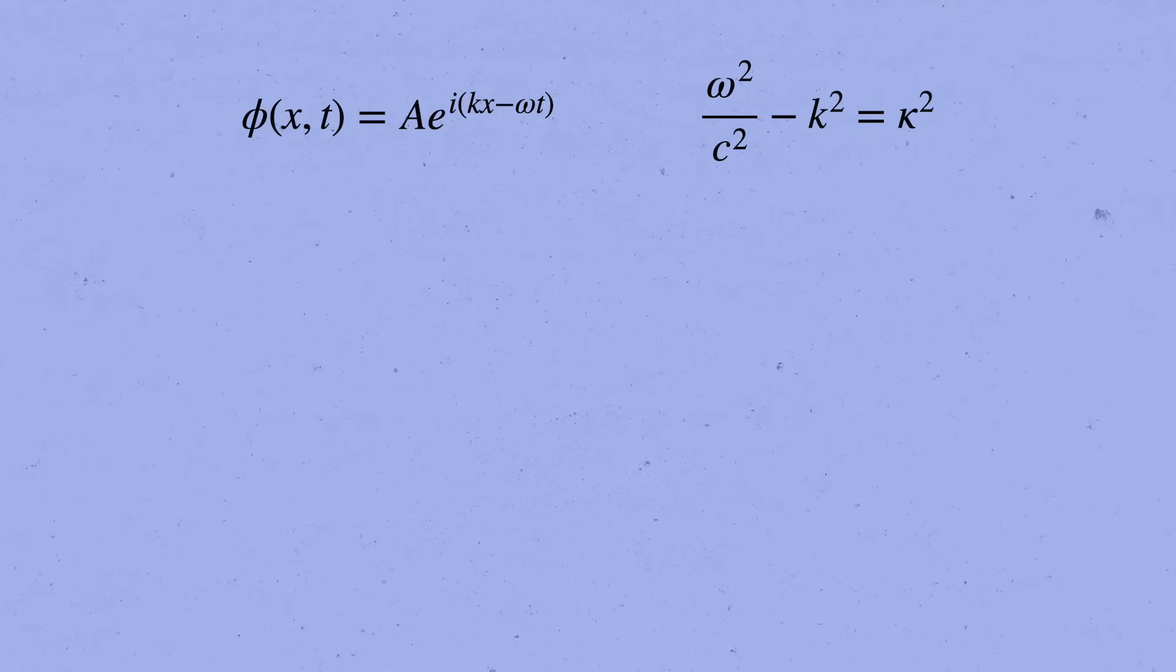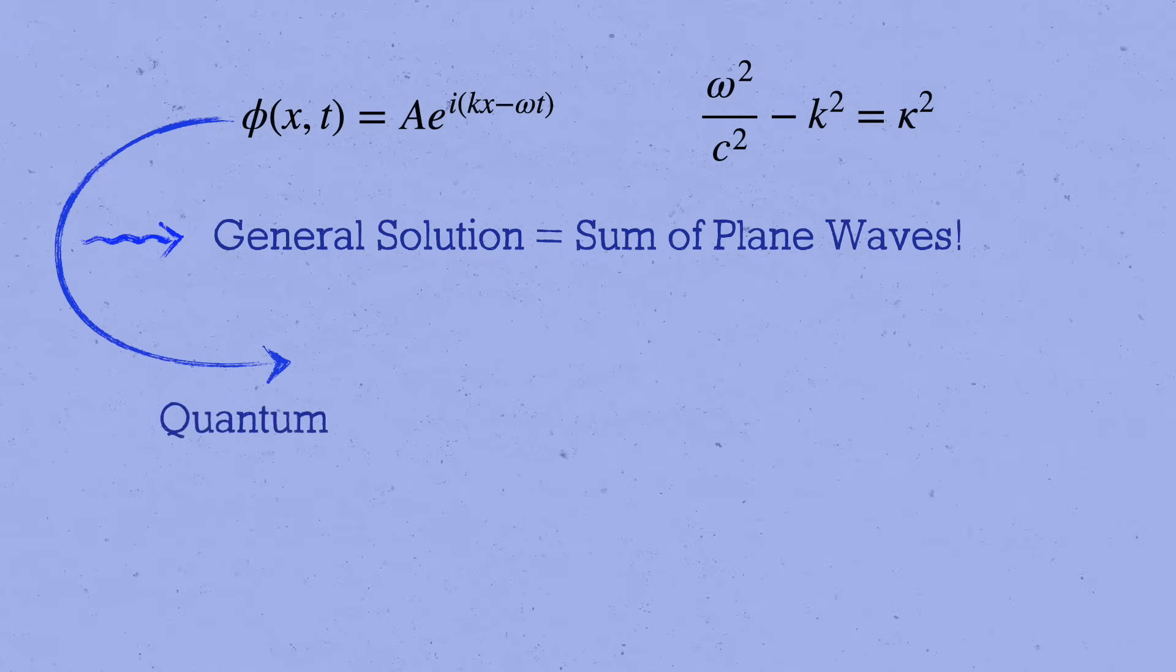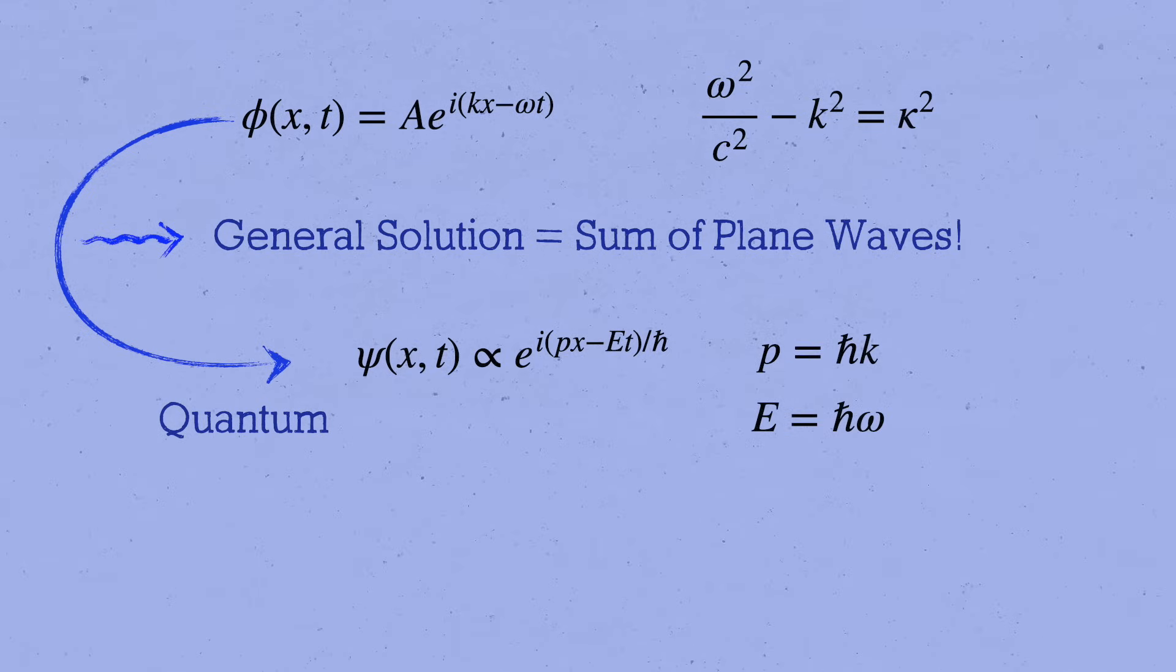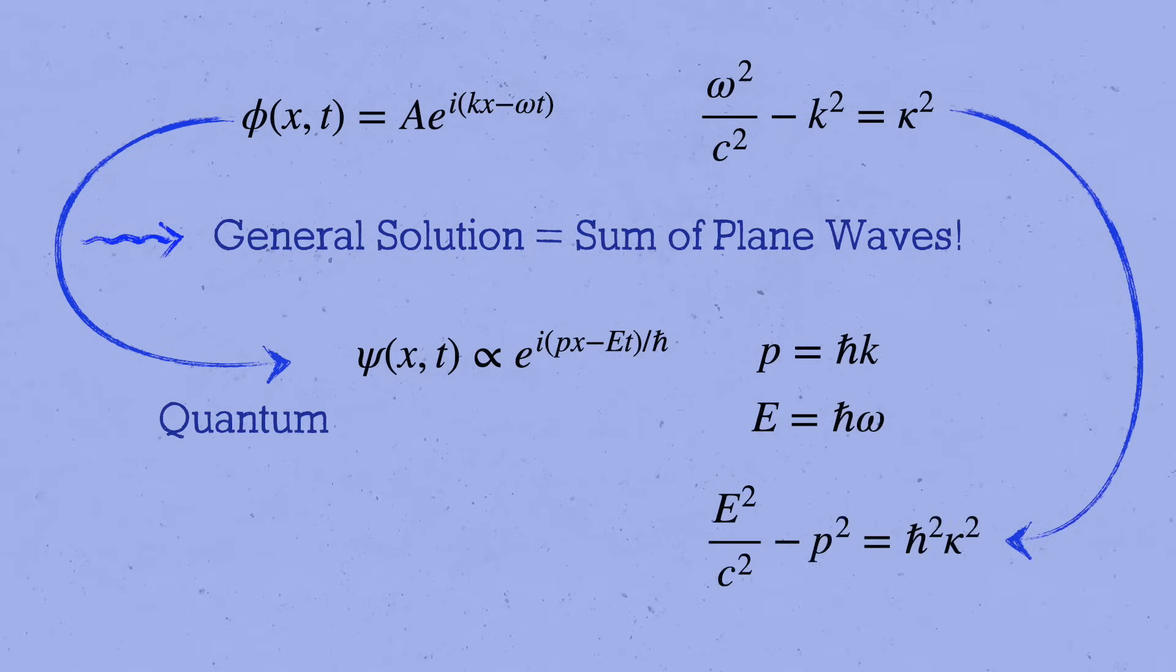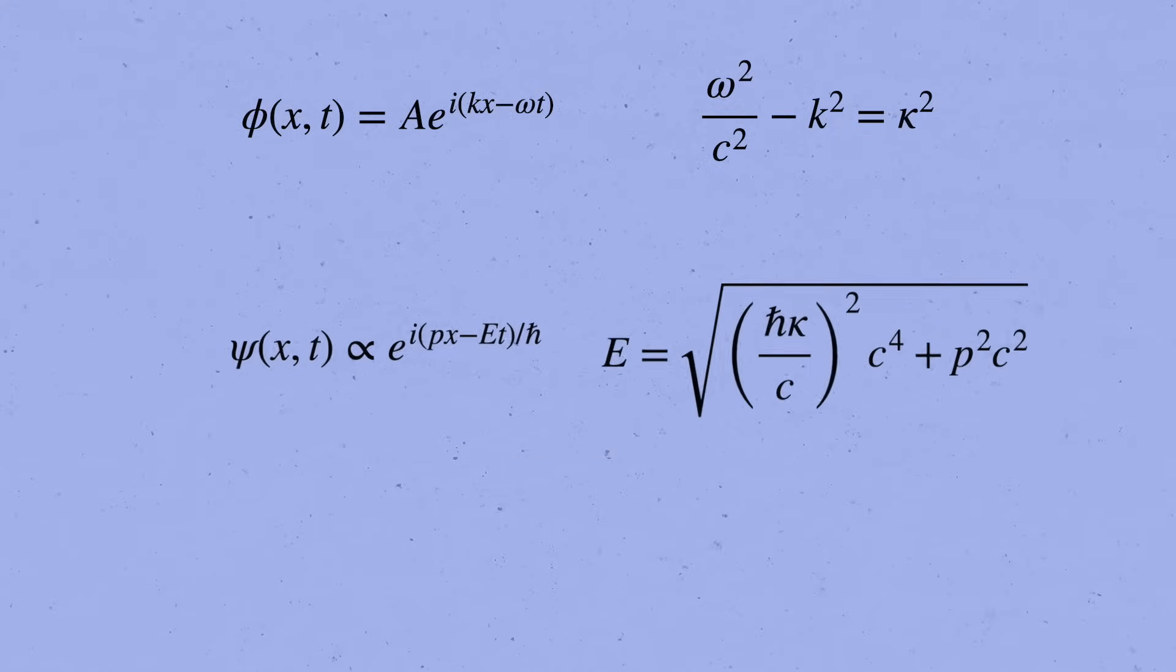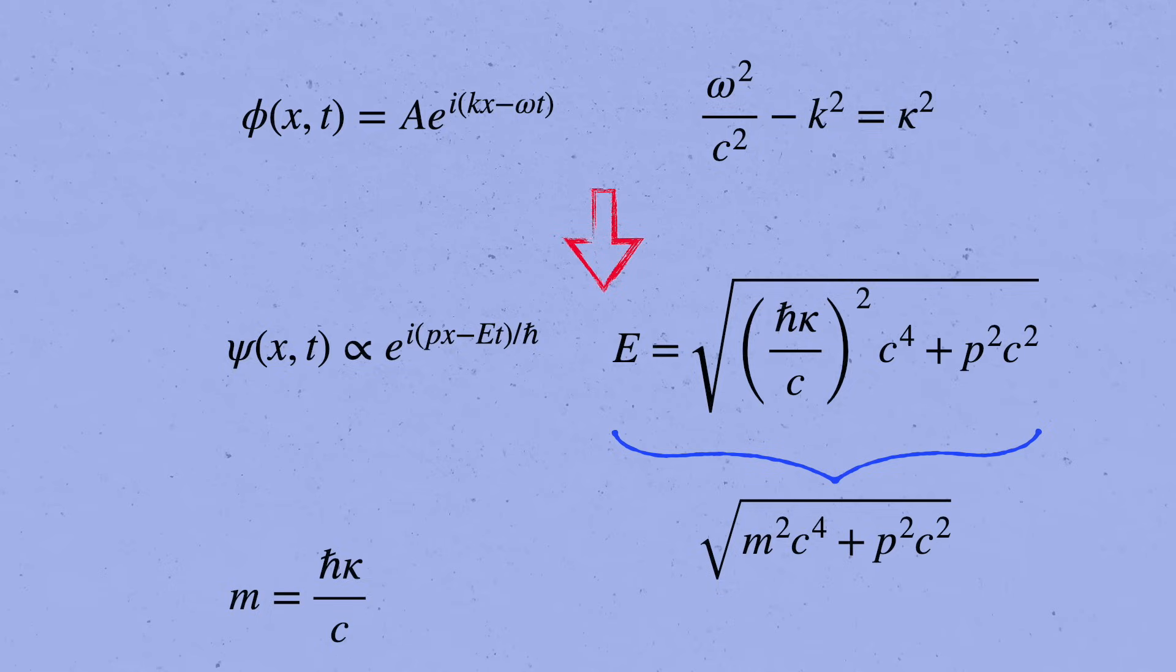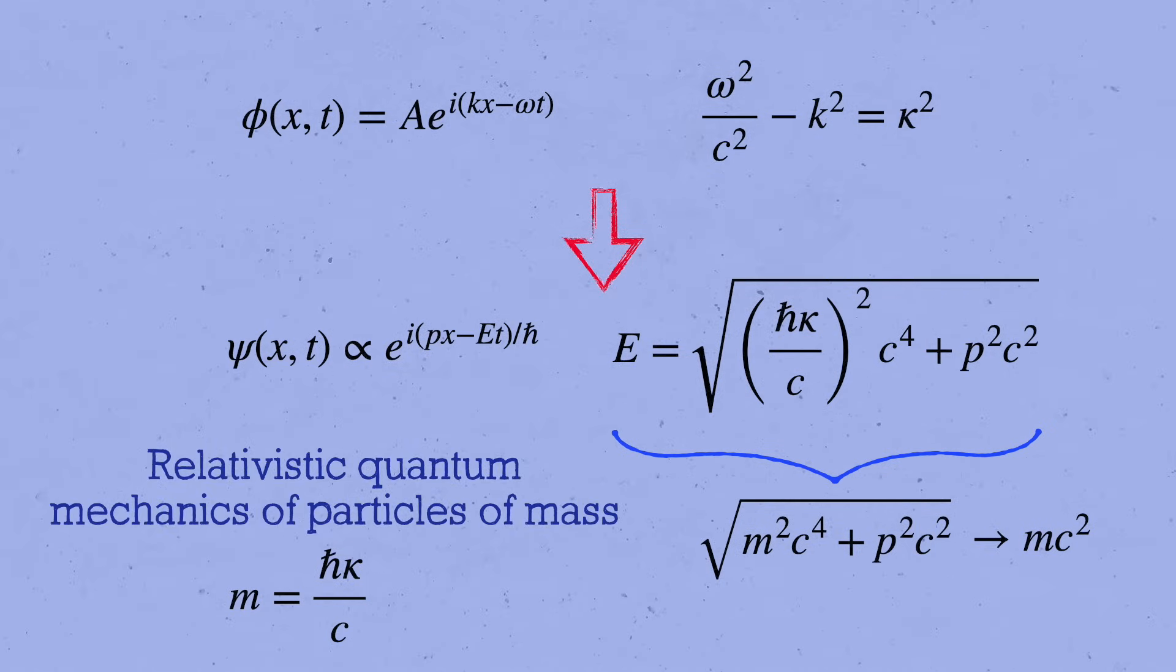These plane wave solutions are very simple and special, but the beauty of them is that the general solution to the Klein-Gordon equation can be written as a sum of plane waves over all possible values of k. In the quantum theory, each plane wave is identified with the wave function psi of a single particle with momentum p equals h-bar k and energy e equals h-bar omega. The condition relating k and omega then implies that p and e have to satisfy e squared over c squared minus p squared equals h-bar squared kappa squared. Or, solving for e, we get this. And that might look familiar. It's Einstein's equation for the energy of a particle of mass m and momentum p, where m equals h-bar kappa over c in this case. When p equals zero, this is the famous e equals mc squared, the relativistic rest energy of a particle of mass m. This is why the Klein-Gordon theory describes the relativistic quantum mechanics of particles of mass m.